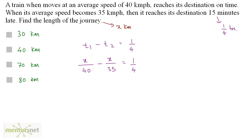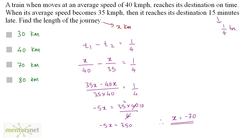Solving this equation gives x as 70 — we ignore the negative sign since distance cannot be negative. The negative arose because we took the difference in the wrong order; it should be x/35 minus x/40. Nevertheless, the correct answer is option C, 70 kilometers.